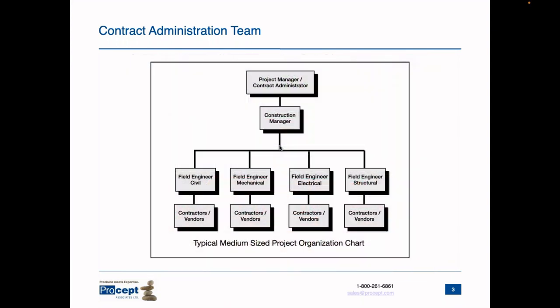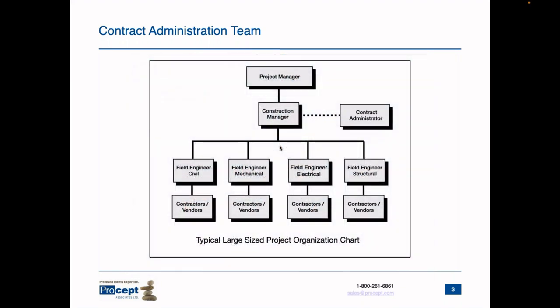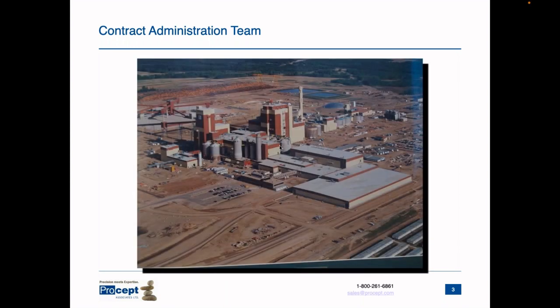This is a medium-sized project, around a hundred million dollars plus. I was a project manager and construction administrator with a construction manager and field staff — an example would be a small port plant at $120 million. This is a large-sized project, around a billion dollars plus. I was a mechanical field engineer responsible for several hundred-million dollar contracts, with a separate person serving as contract administrator. Examples would be a gold mill, a mine, or a pipeline.